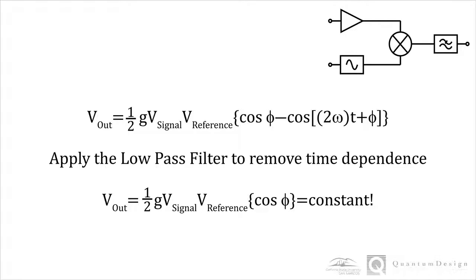The final output is therefore a constant value proportional to the product of the signal and reference amplitudes. In other words, the AC signal has been transformed into a constant DC output. This is why the technique is called locked-in amplification. The instrument is looking to lock in the signal input to the reference sine wave.